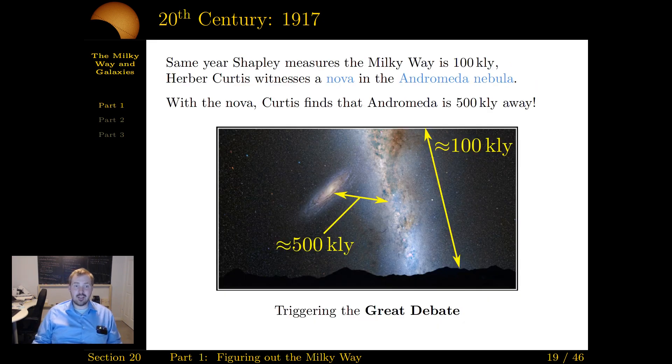In the same year, in the 1917s, Shapley said, look, the Milky Way is 100,000 light years large. Another astronomer, a man named Herbert Curtis, he, looking at the Andromeda Nebula, noticed a nova, not a supernova, just a sudden brightening of the star. And he said, wait a minute, we think we understand how bright that is, how bright it should have been. So he uses that nova to estimate the distance to the Andromeda Nebula. And he gets an estimate of 500,000 light years, five times the size of the Milky Way that Shapley just determined. And so now Curtis is saying, that nebula is not a nebula. It's its own universe, far removed from the Milky Way. And this triggers what we call today, the Great Debate.